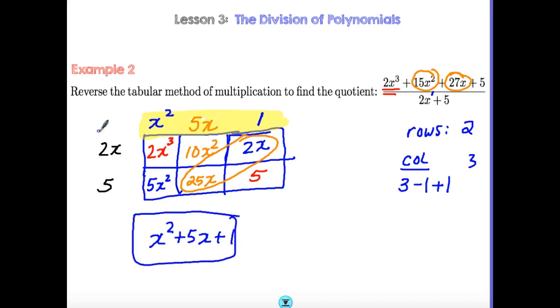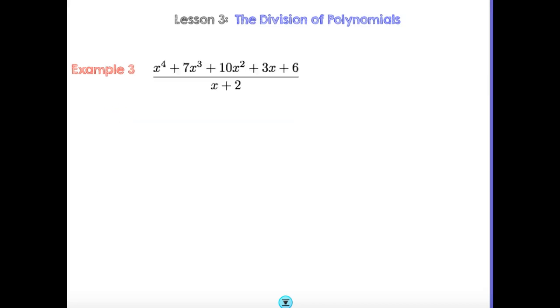Remember, the idea here is if I take 2x plus 5 times this, I get inside here. That's what it is. All right, so let's look at example 3.